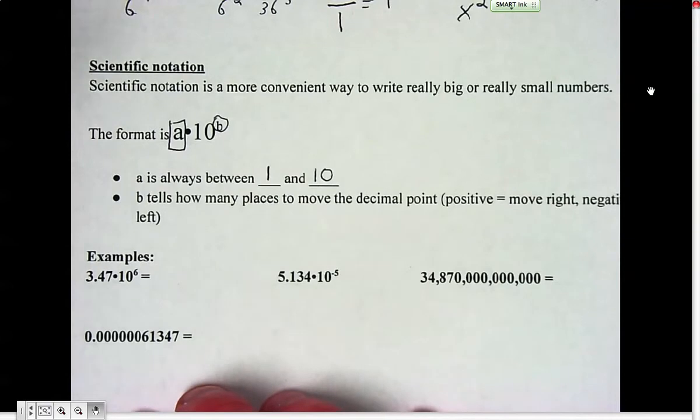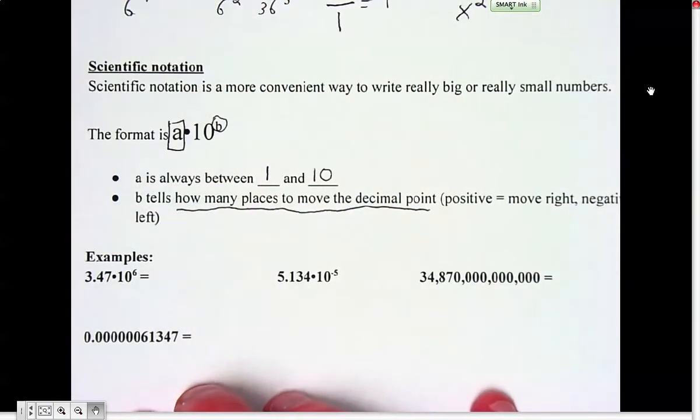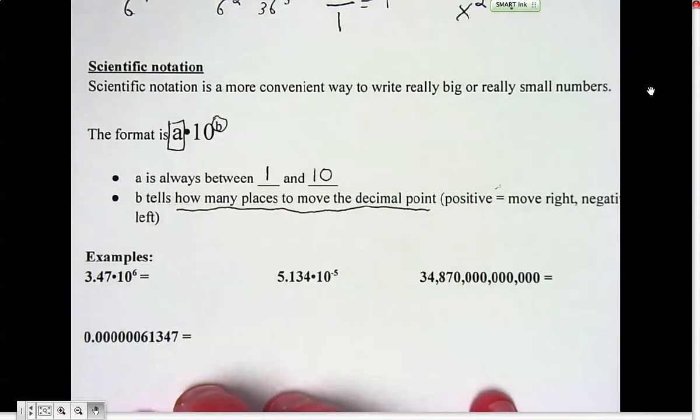When you multiply by a power of 10, it moves the decimal point. If the exponent is positive, you move it to the right. If it's negative, you move it to the left.